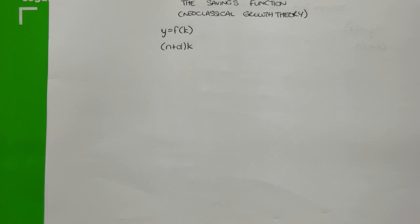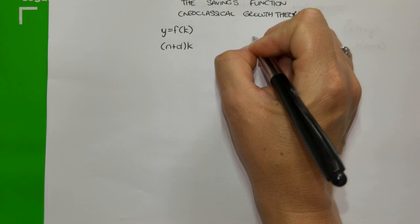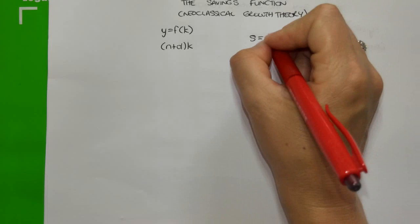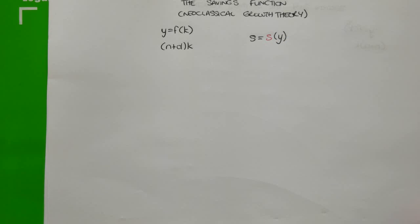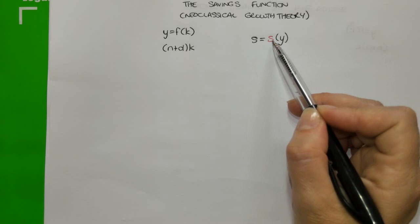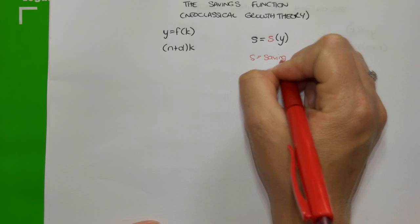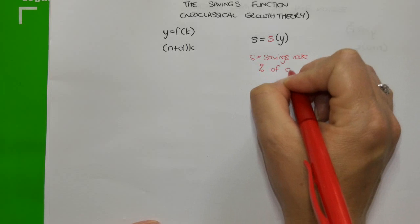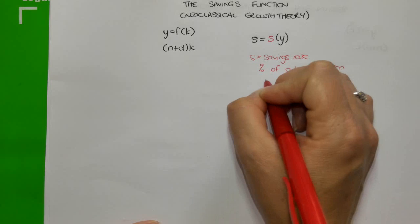The country would need to have access to a pool of savings from which it could borrow in order to finance this investment per person that is needed. And that's where the Savings Function comes in. In particular, the mathematical notation for the Savings Function is S is equal to — and I'm going to use a different color here — s times Y. What does this suggest? It suggests that savings per person depends on the savings rate. S here in red is the Savings Rate, and it tells us the percentage of output per person that is saved.